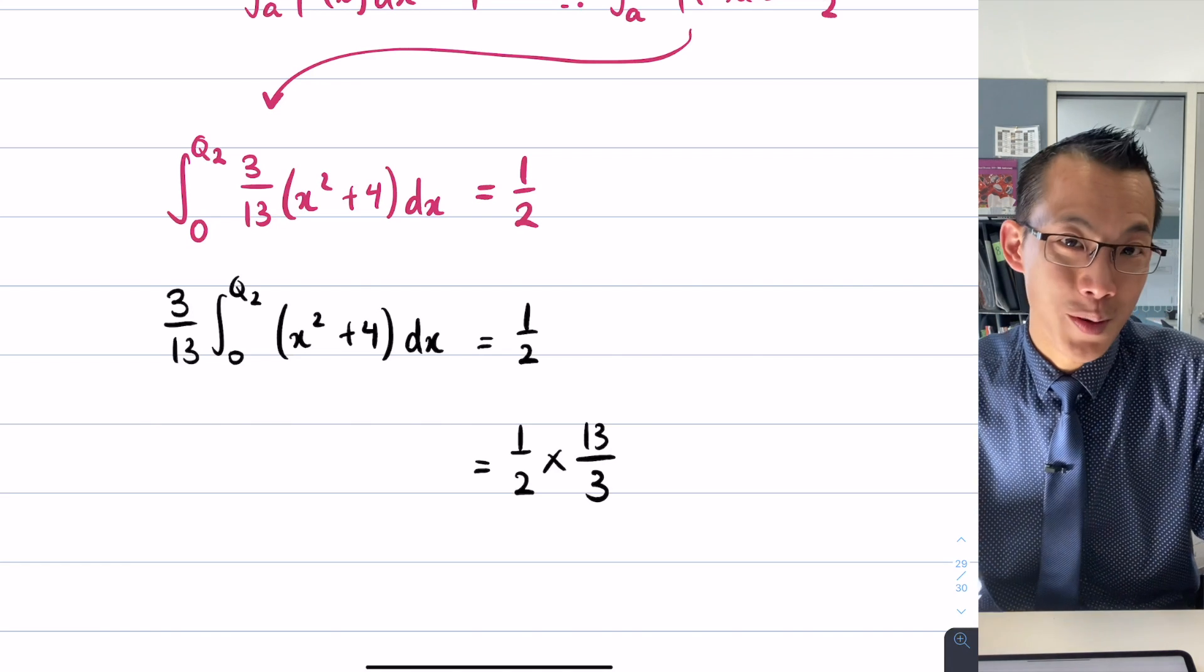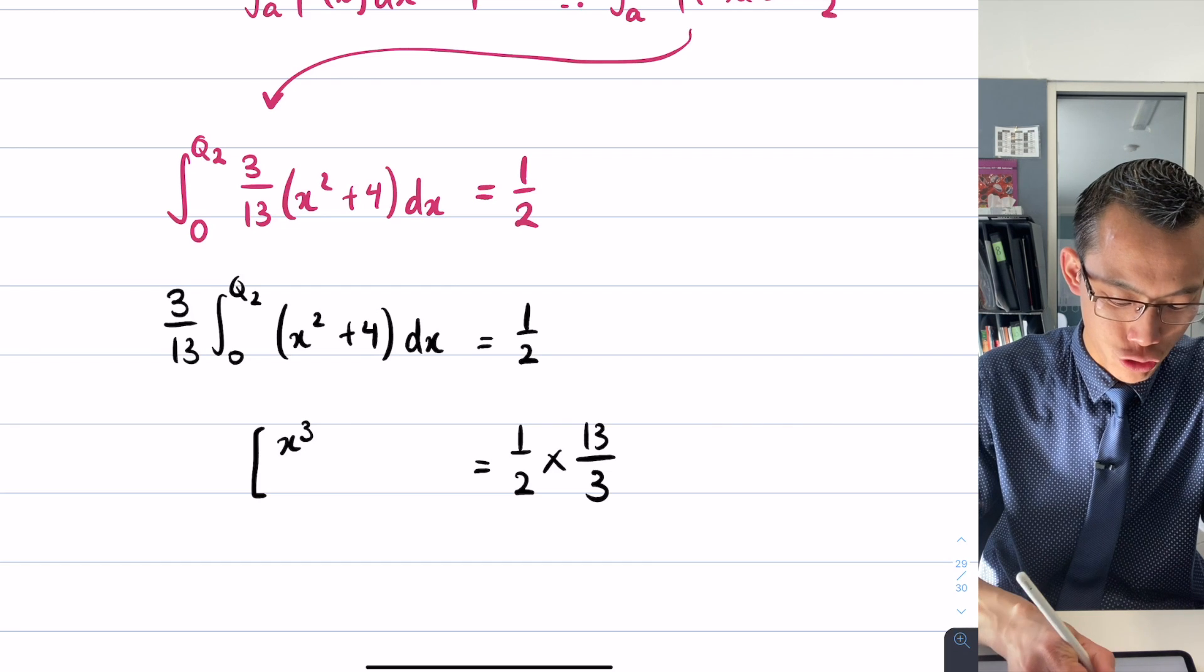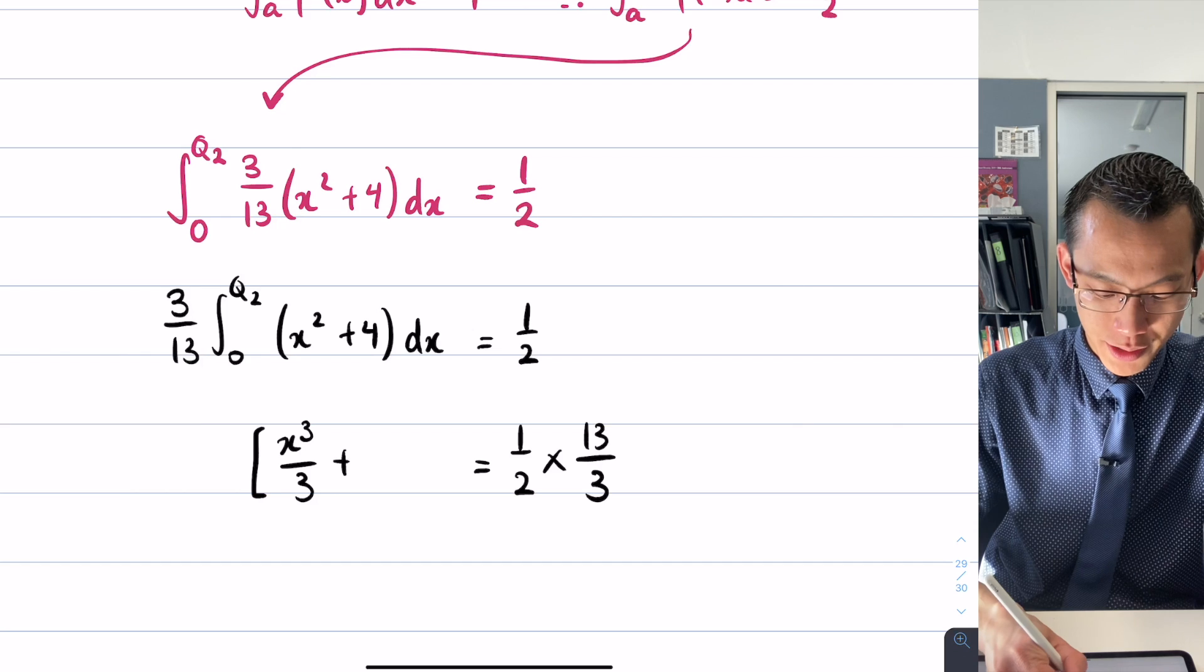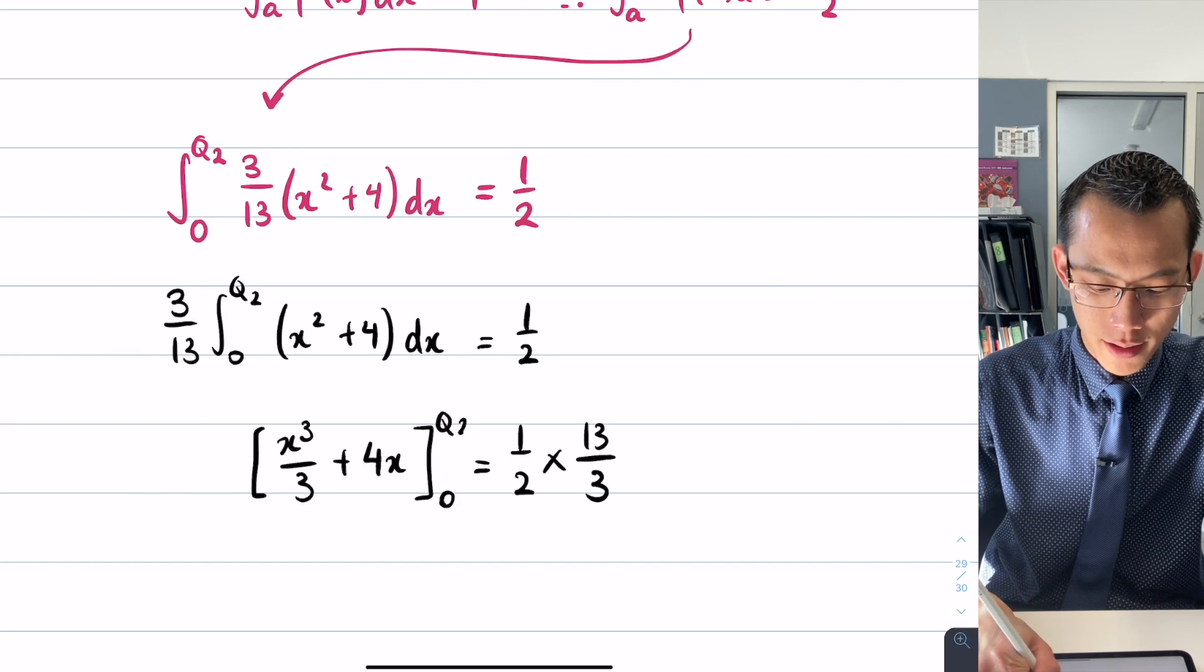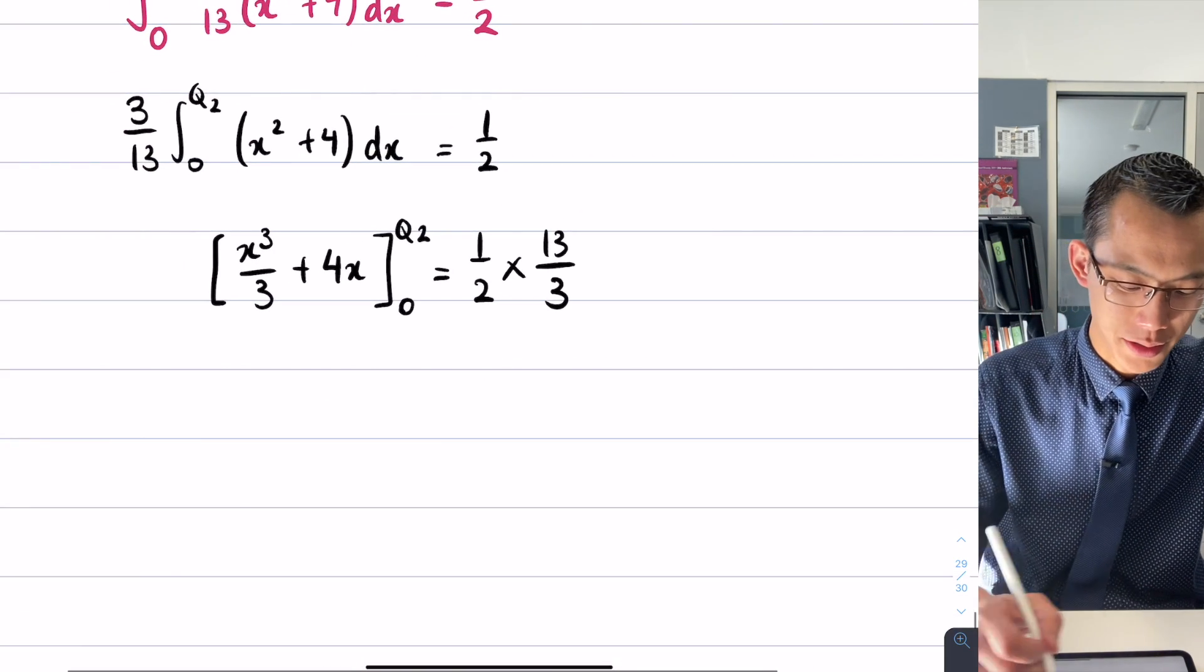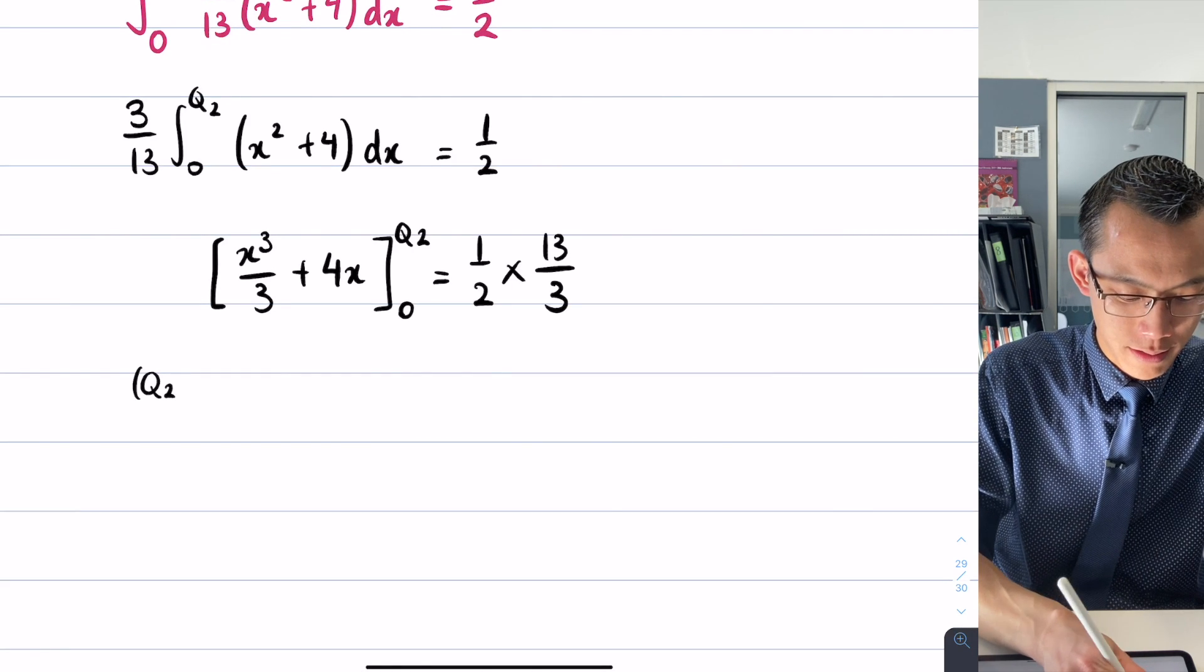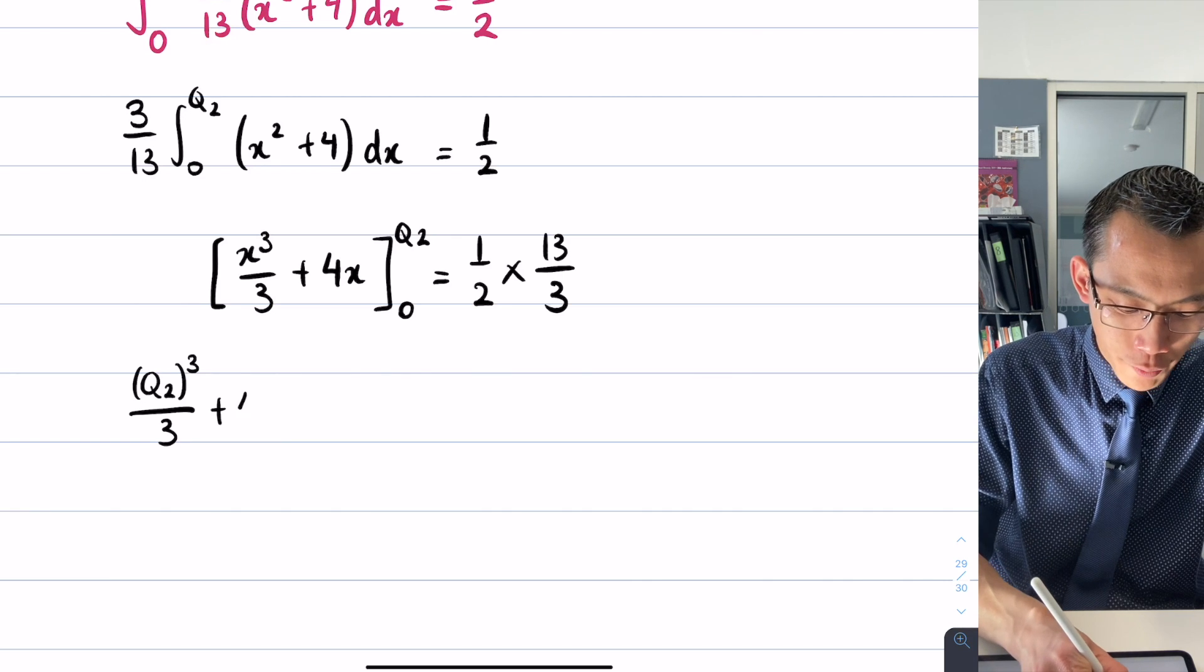I might as well while I'm at it actually perform the integration. So x² integrates up into x³/3, and 4 integrates up into 4x, and then I have my lower and my upper boundaries.